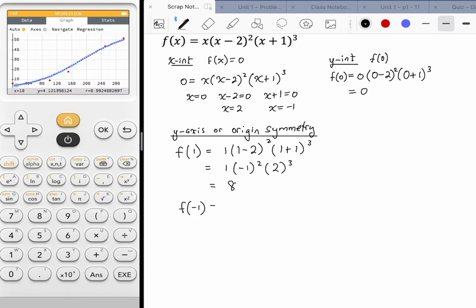Now I'm going to do the same thing with f of negative 1. So negative 1 times (negative 1 - 2) squared times (negative 1 + 1) cubed. This piece right here is going to cause it to zero out. These two are not equivalent. So I would say that there is no y-axis symmetry, and there's no origin symmetry because they would have to be opposites of one another.